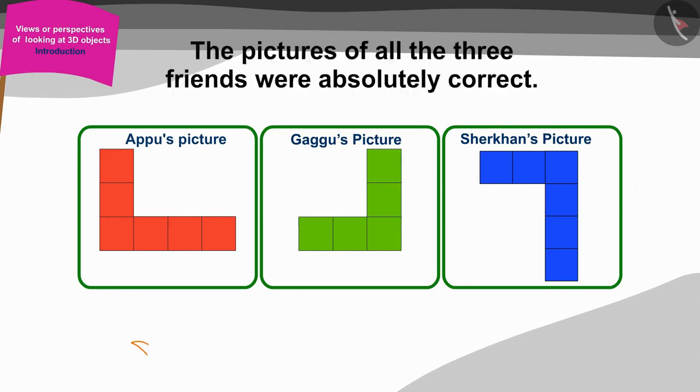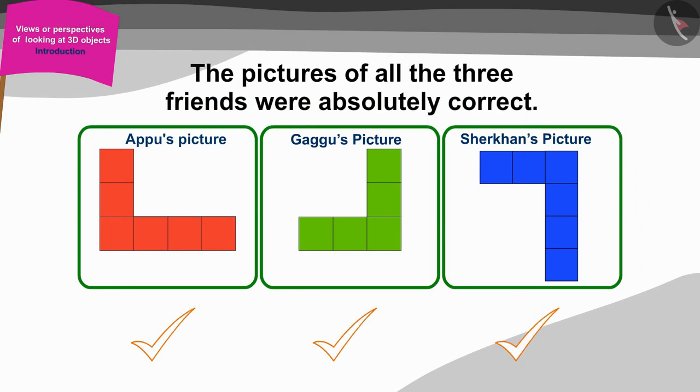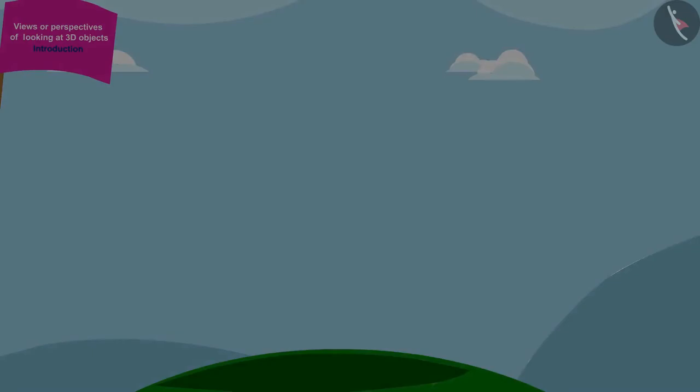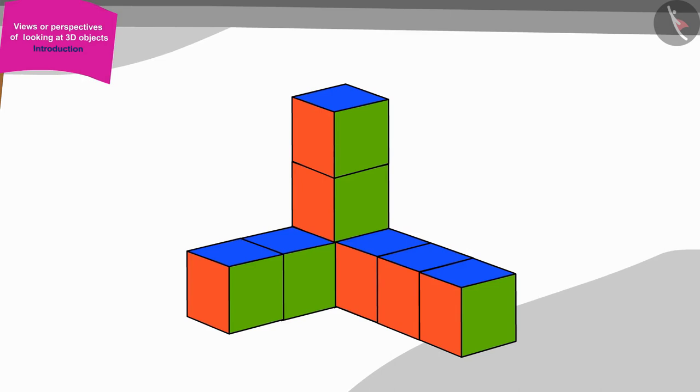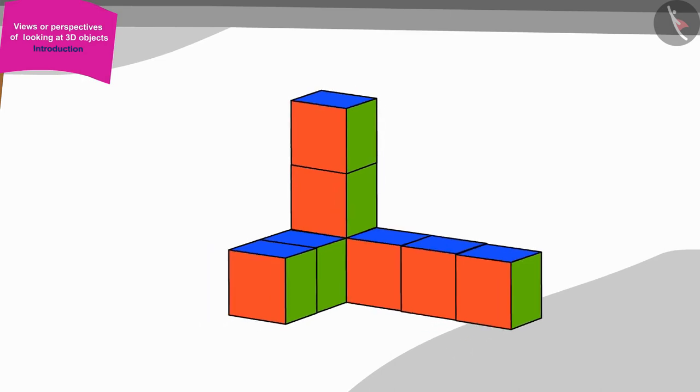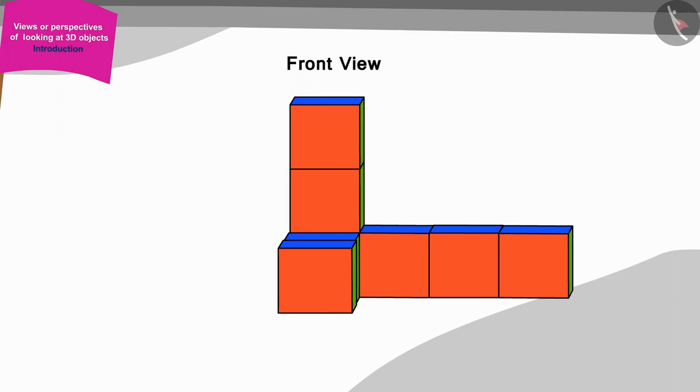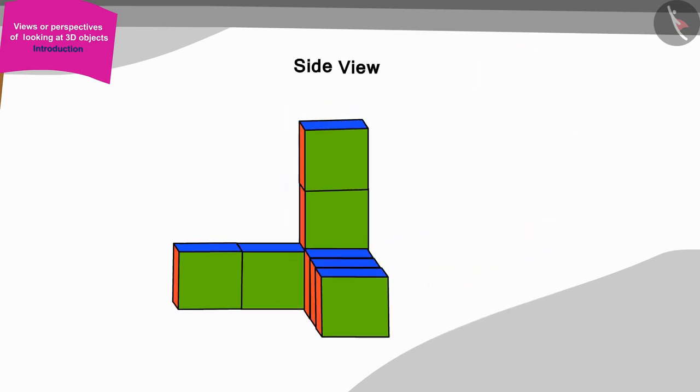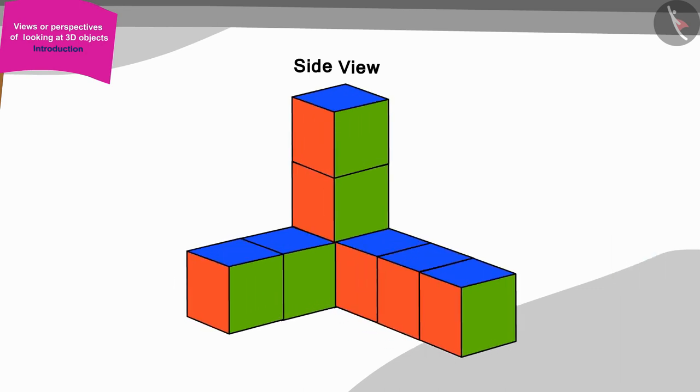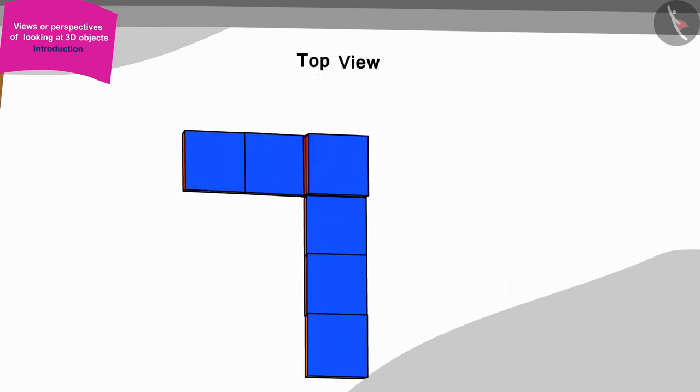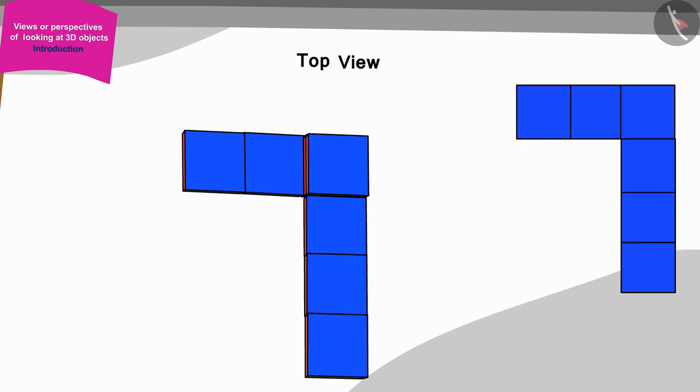Yes, the pictures of all the three friends are absolutely correct. First, Appu saw the shape made by Golu from the front view in this way and made this picture. Gaggu saw the shape from the side view and made such a picture. And finally, Shere Khan saw the shape from the top view and made such a picture.